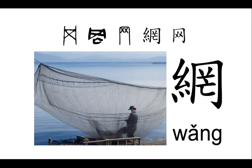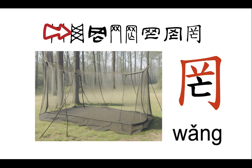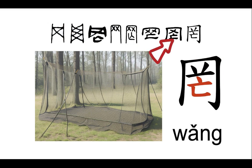The character net looks like a fishing or hunting net way back in Oracle Bone script. It's called a pictograph, because it literally pictures what it means. Later, to help with pronunciation, they added the character Wang underneath. Think of it like saying Wang to sound out Wang. This type of character combo is called a phonosemantic compound.